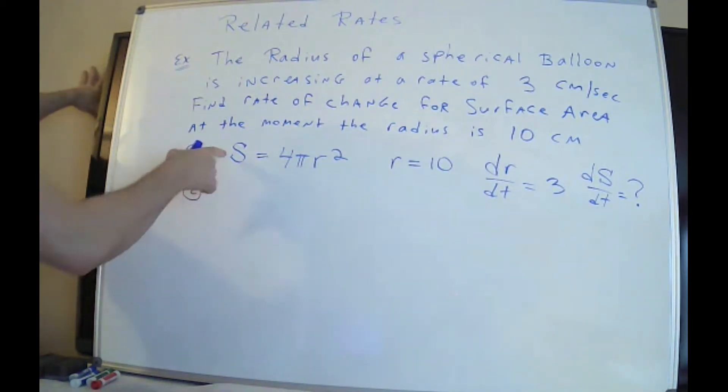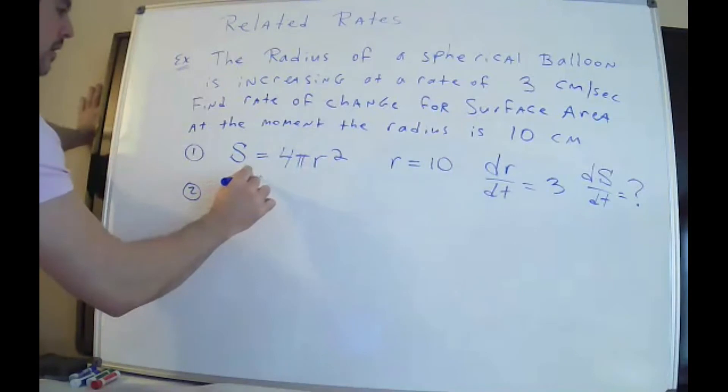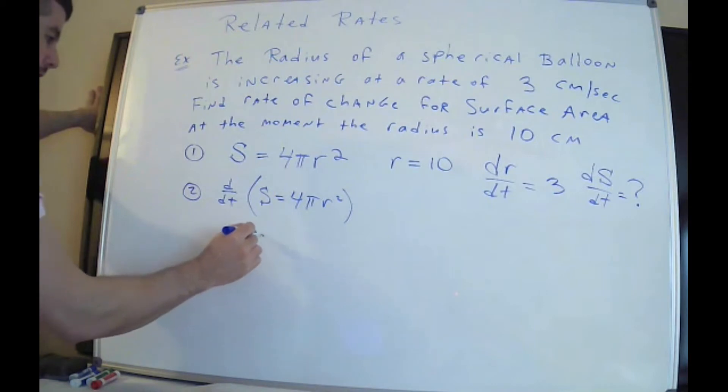Now, step two is to take the derivative of this thing with respect to t. So you're going to do d/dt of this whole formula. I'm taking up too much space by writing it, but I want you to see that step. So now I'm going to do my derivative. The derivative with respect to t of S is 1. The derivative of S is 1. It's a letter. If you take the derivative of S, it's 1. So the derivative of S is 1 times dS/dt. That's what I'm trying to solve for.